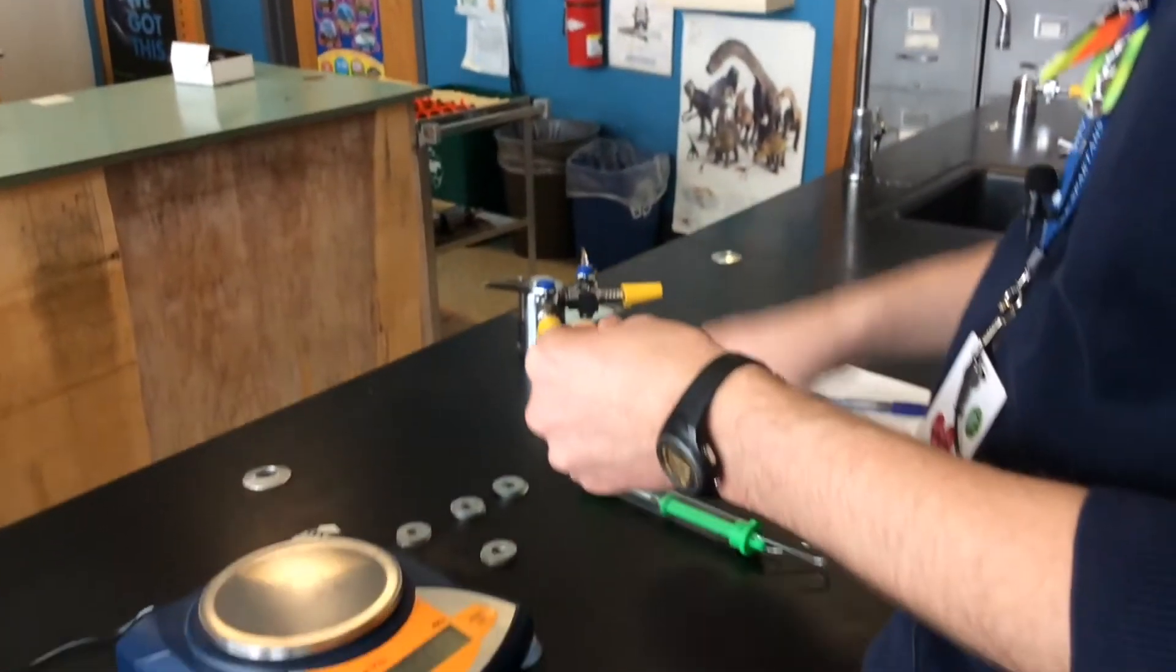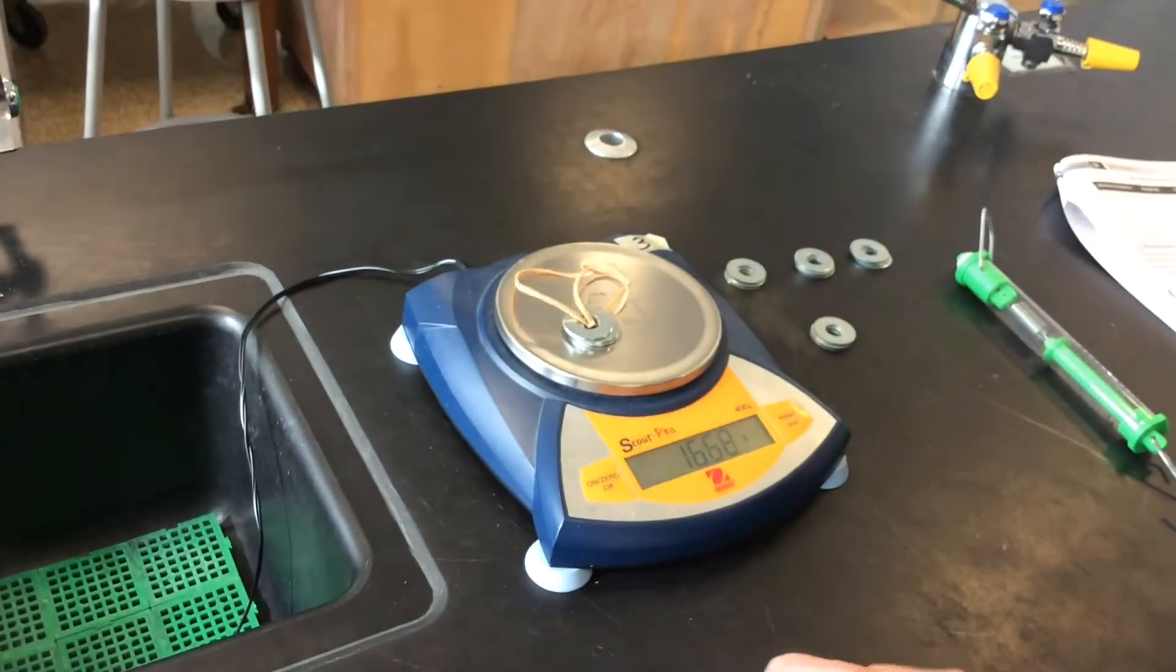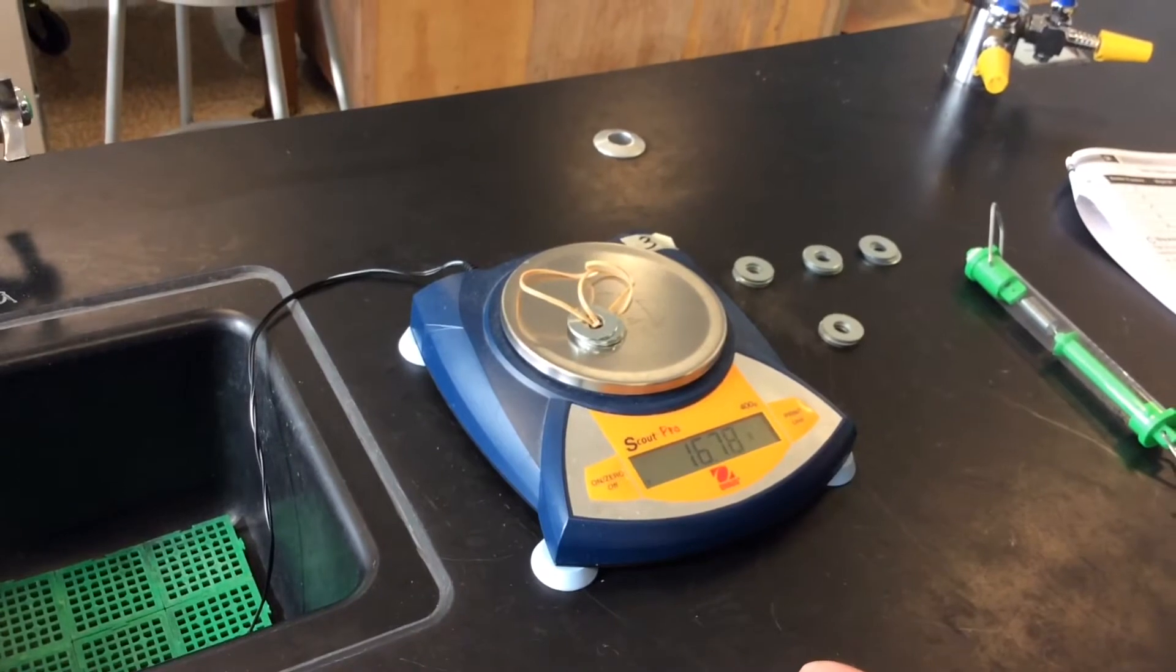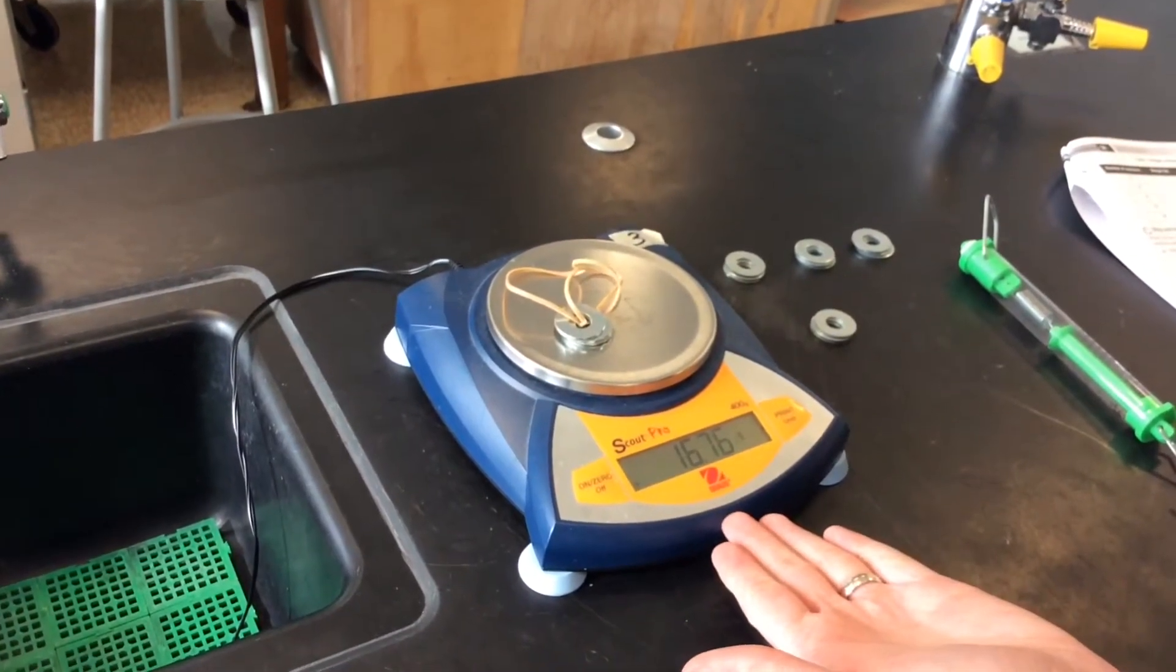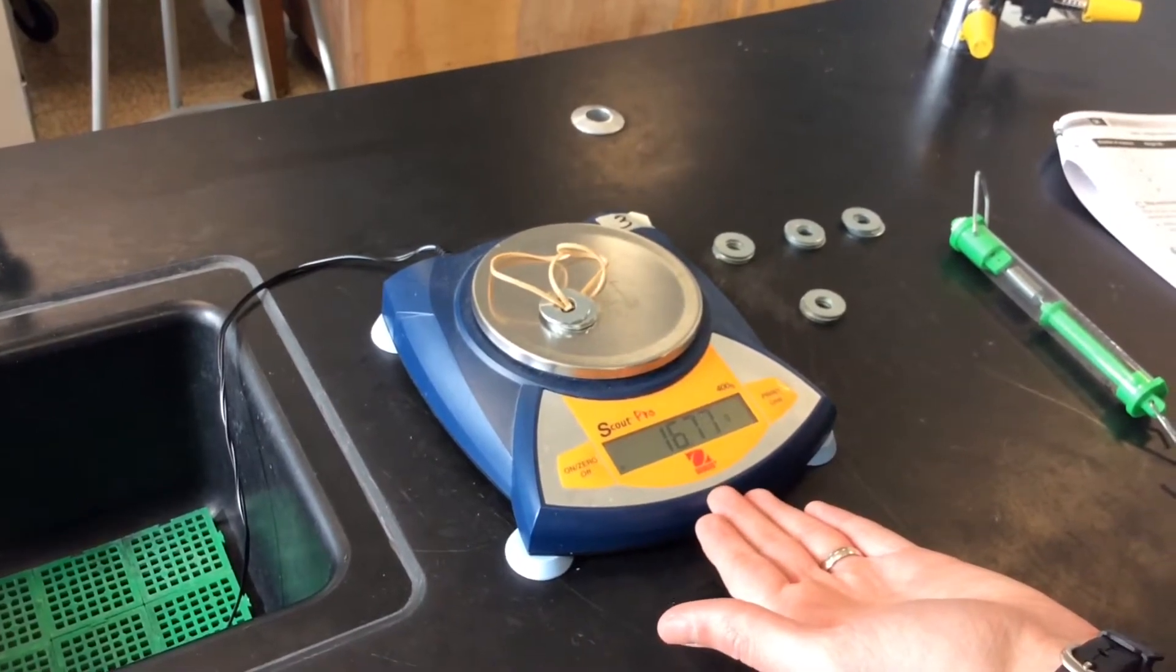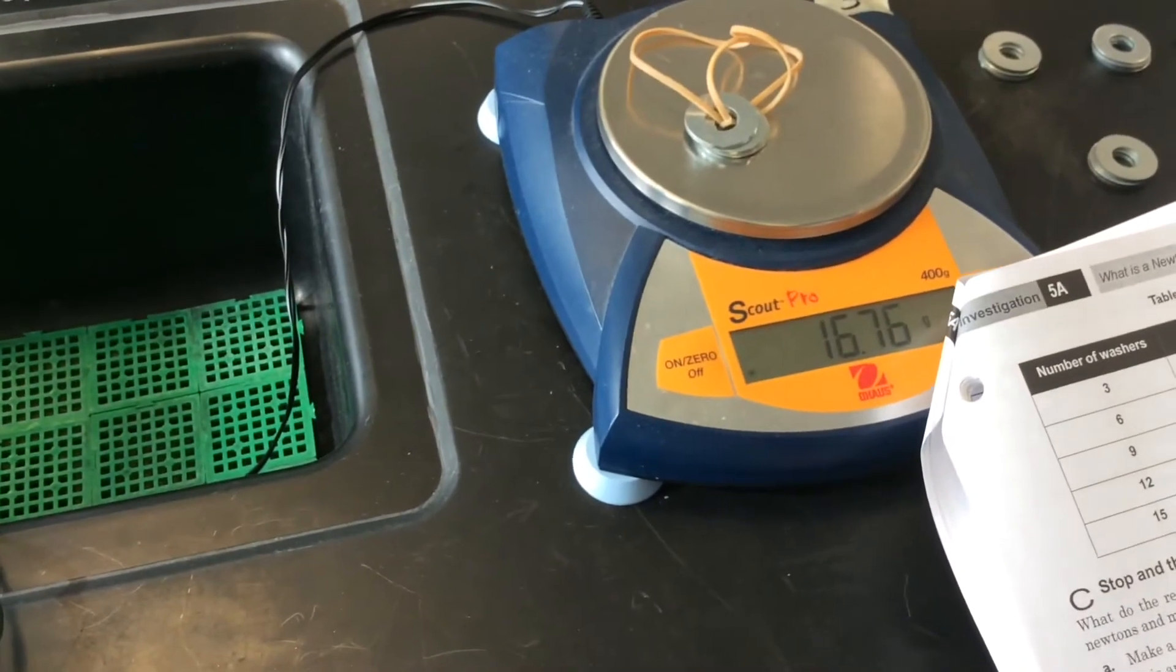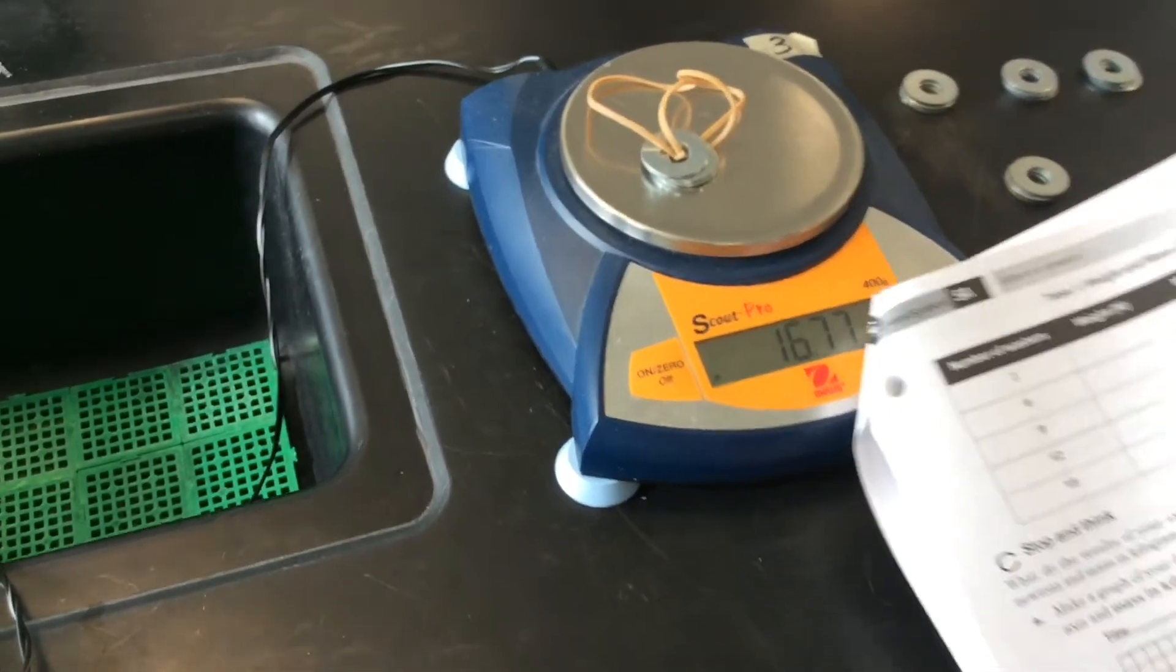And then for each one, you're also going to set it on the balance. By the way, this is three washers, your first data point. So there we have our first mass. You'll record that on the data table under mass in grams. And then you also need to convert that to kilograms.